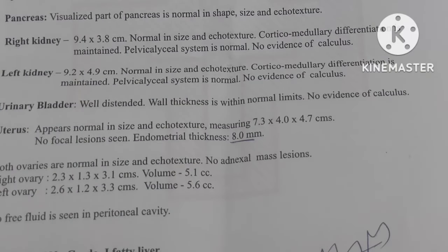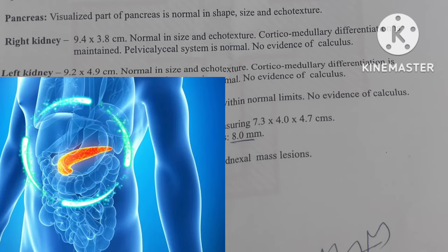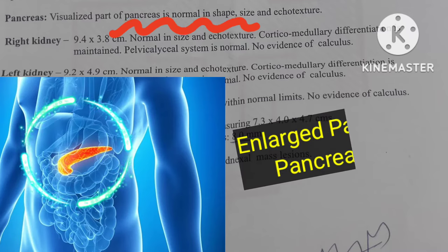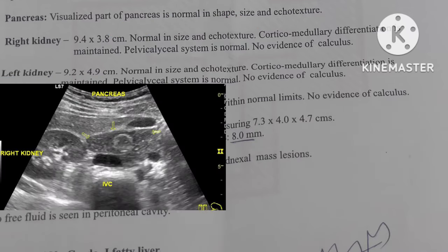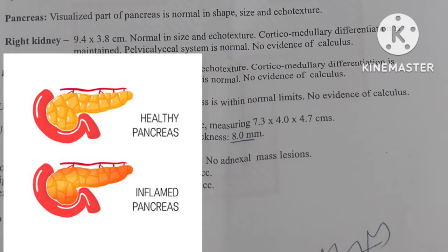Next comes the pancreas, an organ present behind the stomach and in front of the spine. If normal in size, they mention it as normal. If enlarged, they mention enlarged pancreas. They also mention the ecotexture — the tissue pattern. A common term is pancreatitis: 'itis' means inflammation, so if there is any swelling or inflammation of the pancreas, the condition is called pancreatitis.